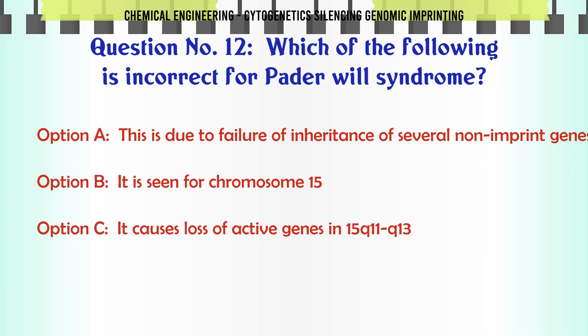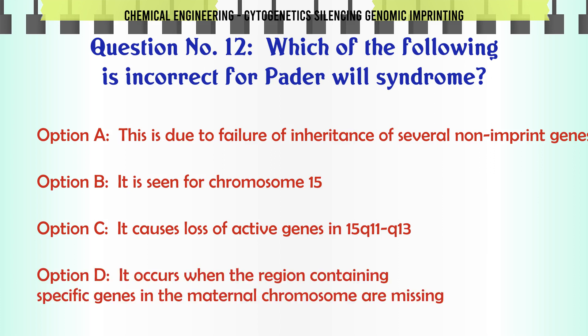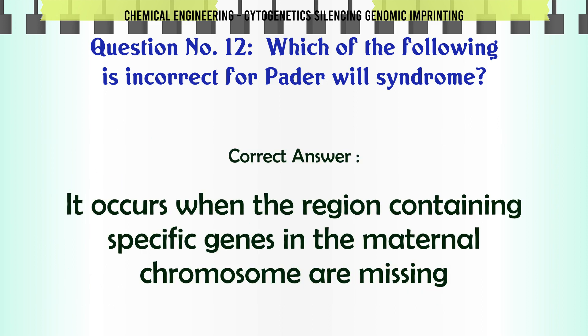Which of the following is incorrect for Prader-Willi syndrome? A. This is due to failure of inheritance of several non-imprinted genes. B. It is seen for chromosome 15. C. It causes loss of active genes in 15q11-q13. D. It occurs when the region containing specific genes in the maternal chromosome is missing. The correct answer is D: It occurs when the region containing specific genes in the maternal chromosome is missing.